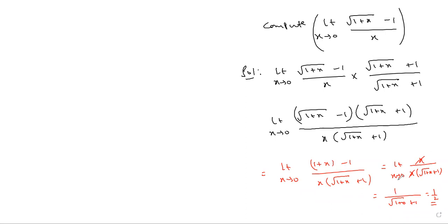Next, substitute x = 0. We get √(1+0) + 1 = √1 + 1 = 1 + 1 = 2, so the limit equals 1/2.